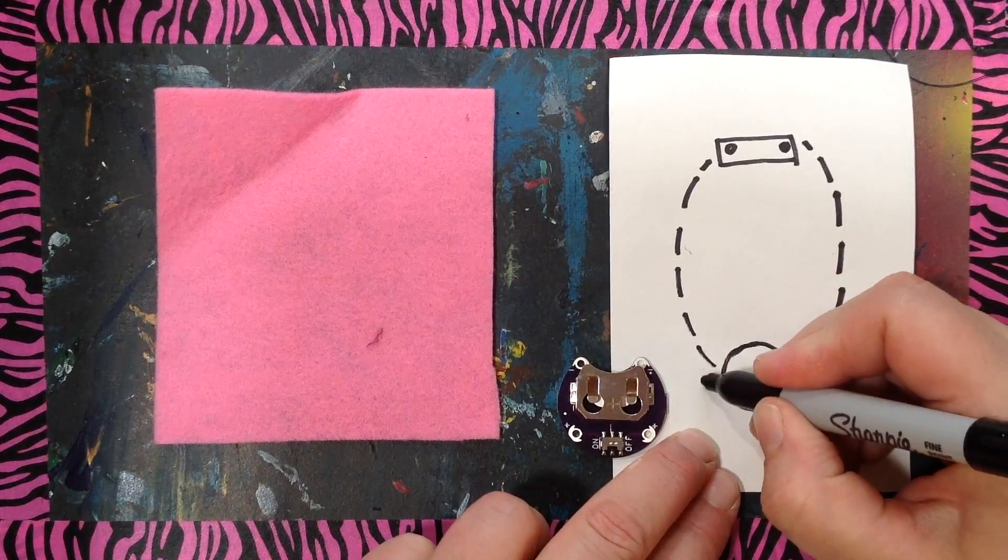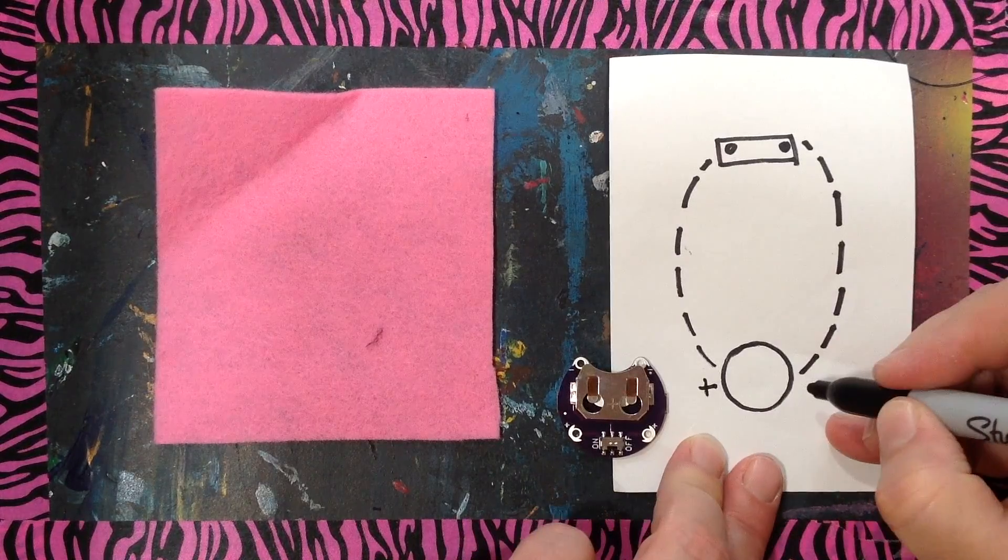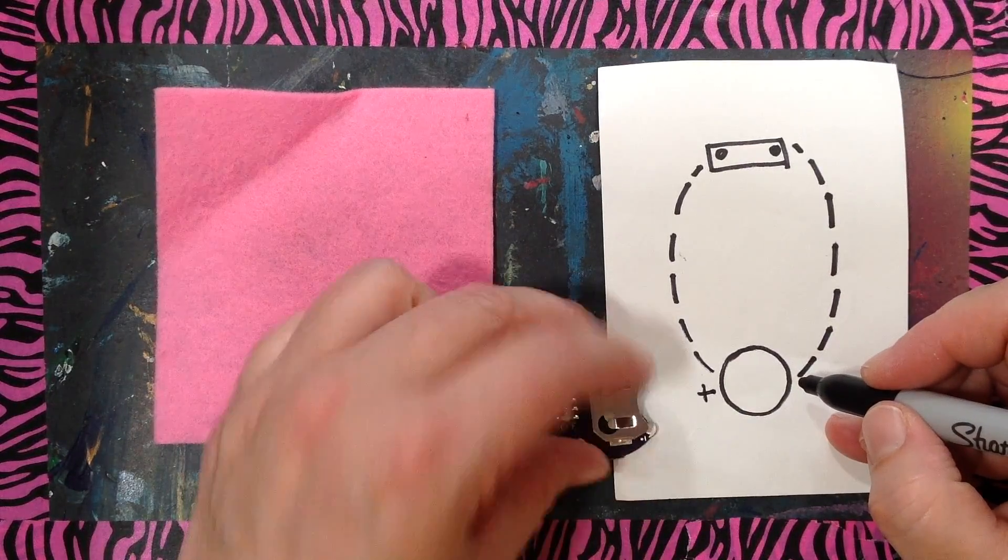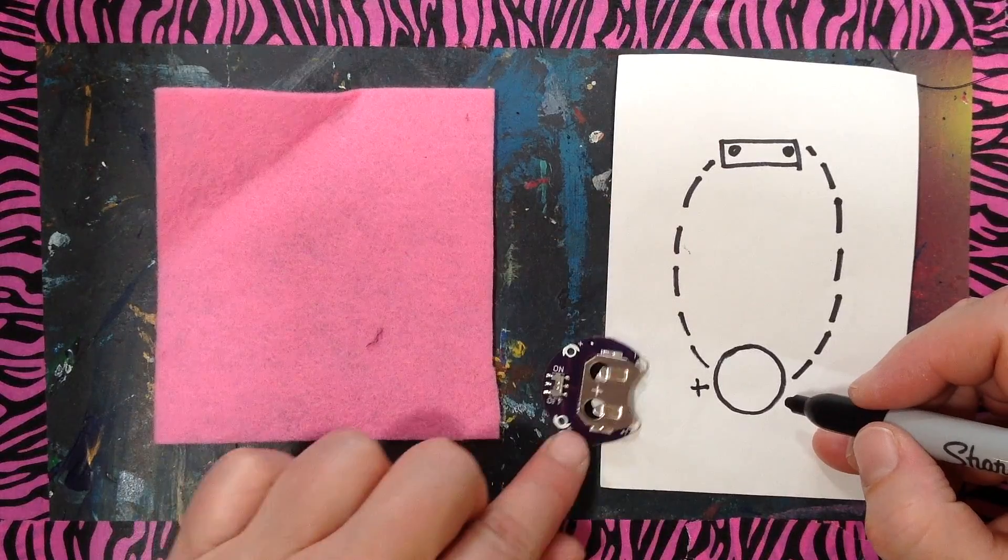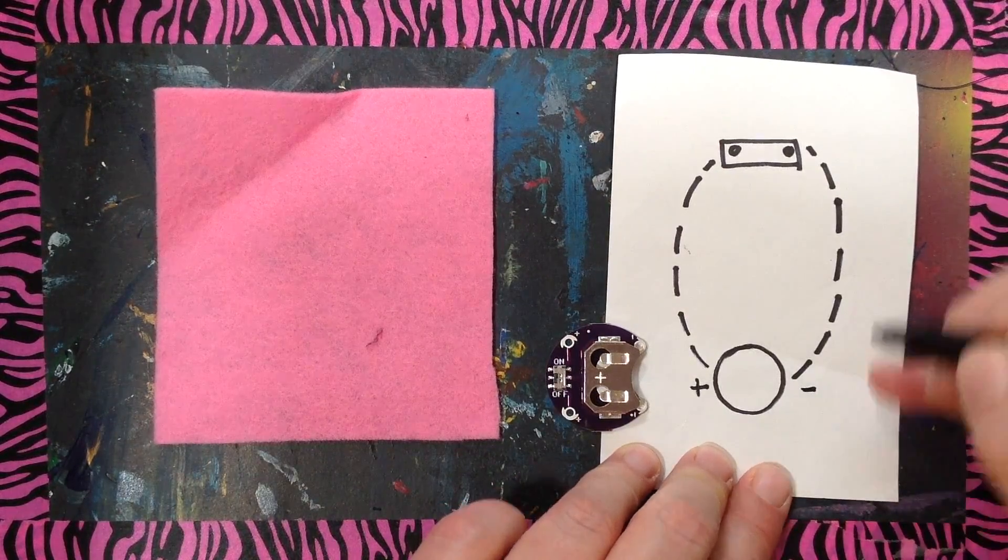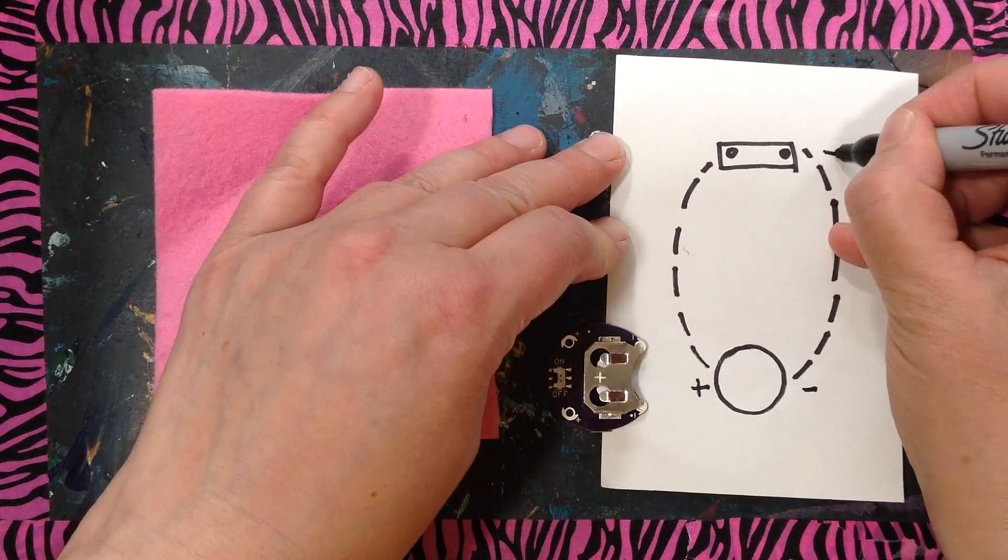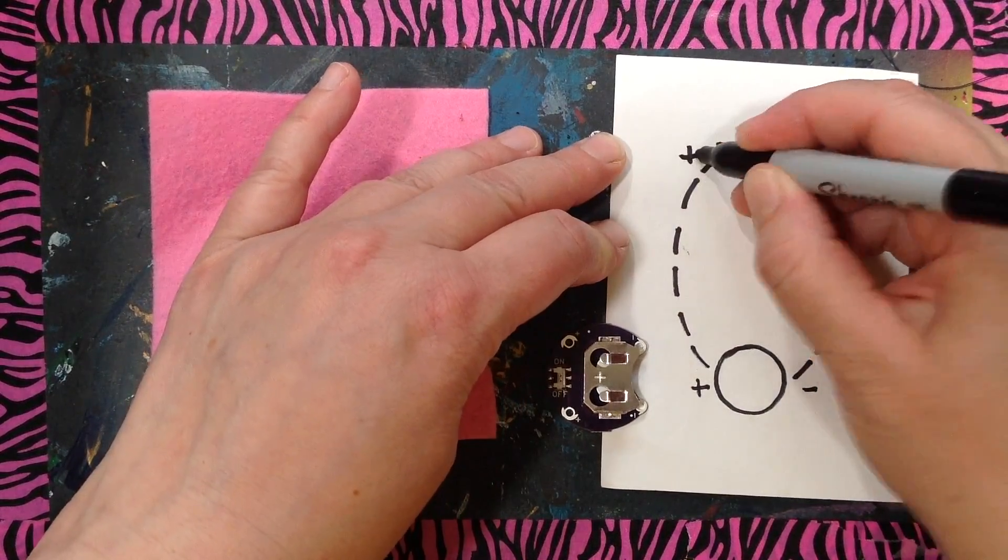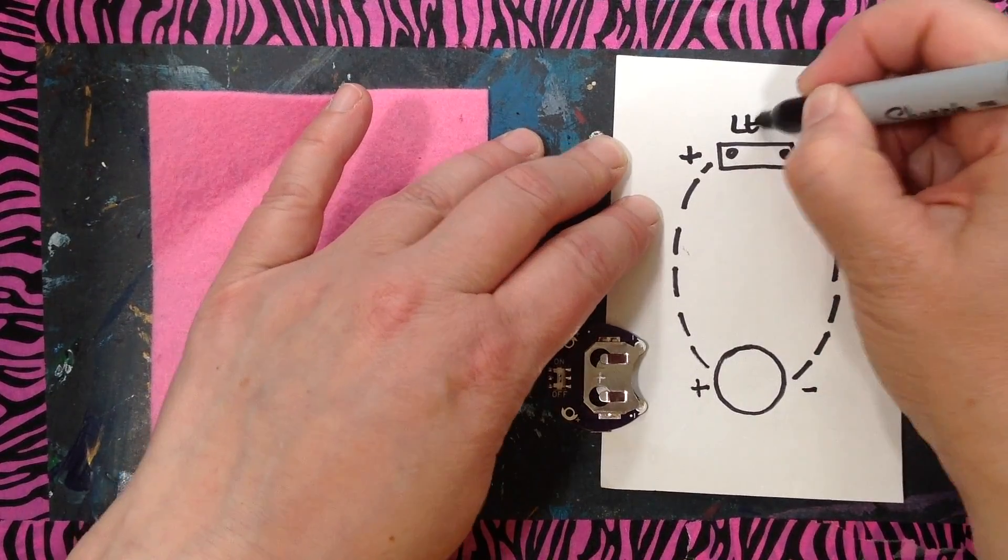Now you have to make sure you know that you're doing positive and negative. So over here I have the positive side and it goes like this. There's the positive side and this is the negative side. So that means this will be the negative side on the LED and this will be the positive side on the LED.